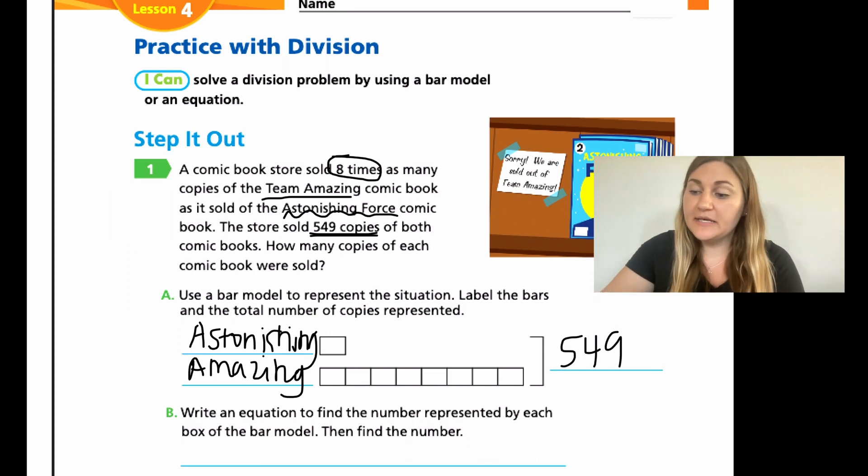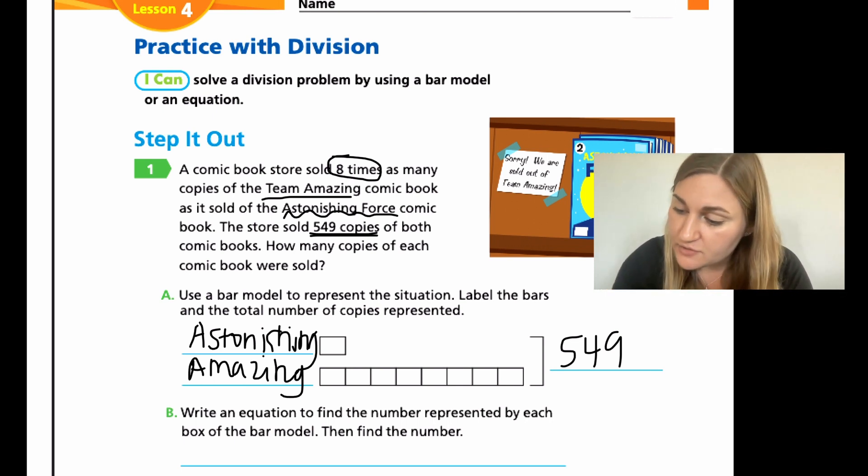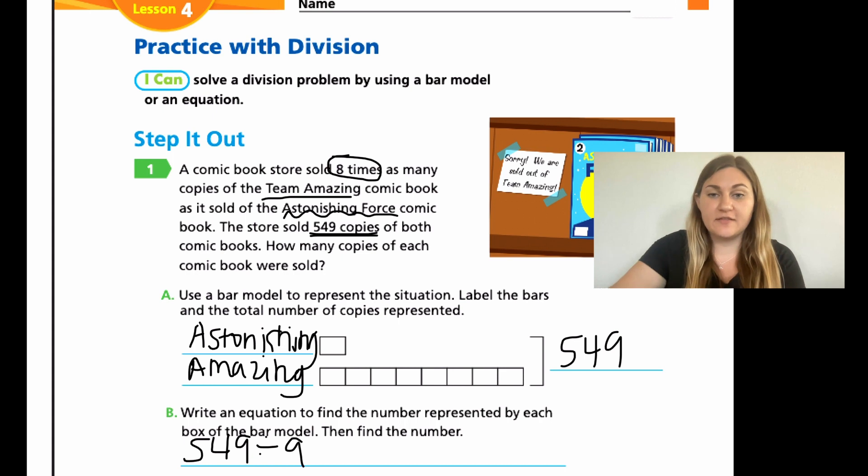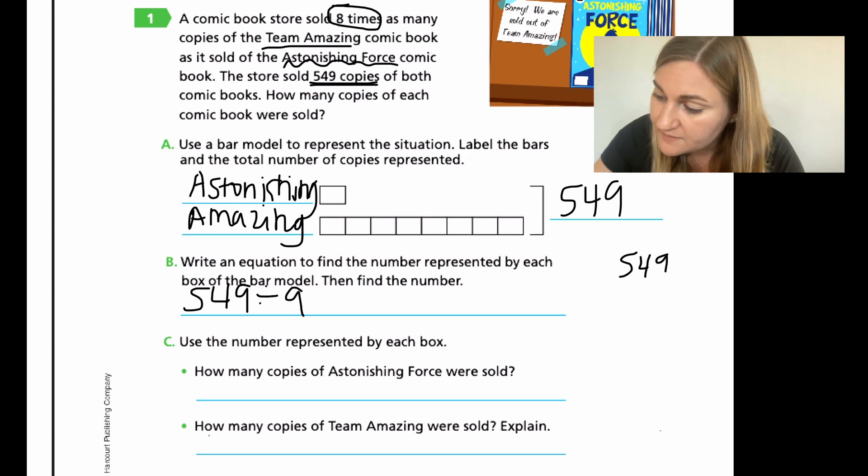So for part B, it says write an equation to find out the number represented by each box. So if we have nine boxes and we know that all nine boxes are equal to 549 copies, what we need to do is divide those numbers to figure out what one box is worth. So 549 divided by the nine, then find the number. So what we're going to do is we're actually going to solve it over to the right. So 549 divided by nine.